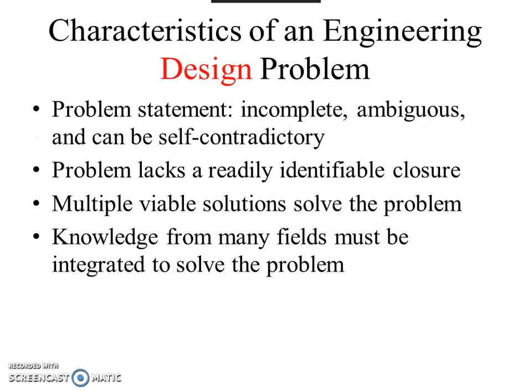By contrast, engineering design problems come with a problem statement — usually from a customer — that is often incomplete, ambiguous, and even at times self-contradictory. The problem lacks readily identifiable closure, meaning you can continue to improve and try to make a better design — iterating essentially forever and perhaps not getting to the best possible solution. There are also multiple viable solutions, so you can find yourself going down one path only to realize there's a better solution down some other path. Both might solve the problem, but one could potentially do a better job. Finally, knowledge from many fields has to be integrated to solve these types of design problems.